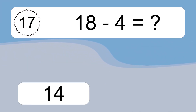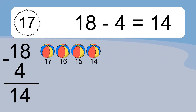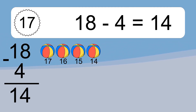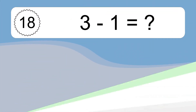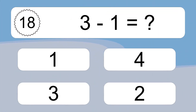18 minus 4 equals what? 18 minus 4 equals 14. Let's count it: 17, 16, 15, 14.